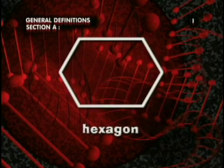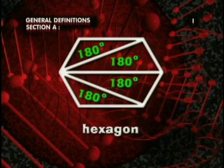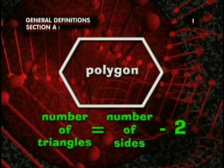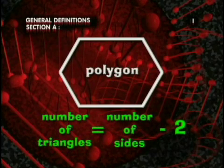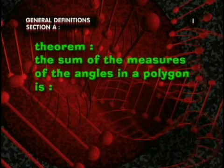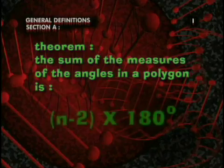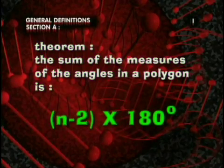How about a hexagon? We can divide it into four triangles. There's a simple pattern developing: the number of triangles a polygon can be divided into is always two less than the number of sides. So our theorem is: the sum of the measures of the angles in a convex polygon with n sides is (n minus 2) times 180 degrees.